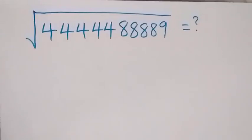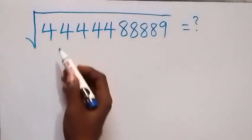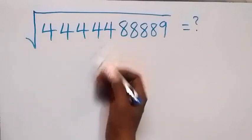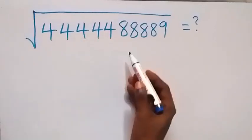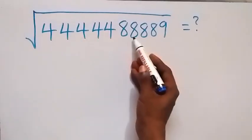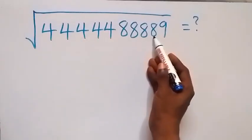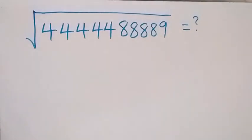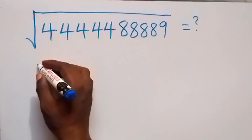Hello, you are welcome. How to solve this nice square root problem. We have square root of 44444 — that's five 4s — then 8888 — four 8s — then 9.